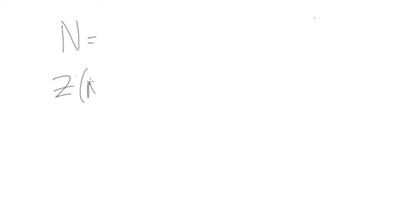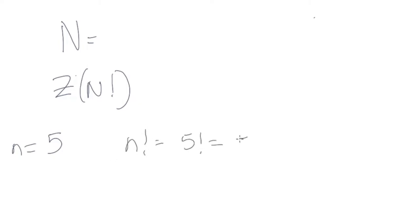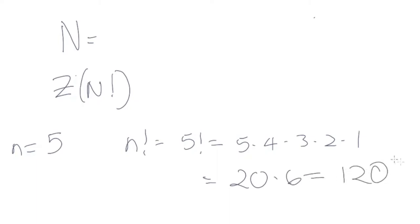So let's say we have n = 5. I'm going to find n factorial, which is 5 factorial: 5 times 4 times 3 times 2 times 1. That gives us 20 times 6, which is 120. The number of trailing zeros is the number of zeros at the end of a number.